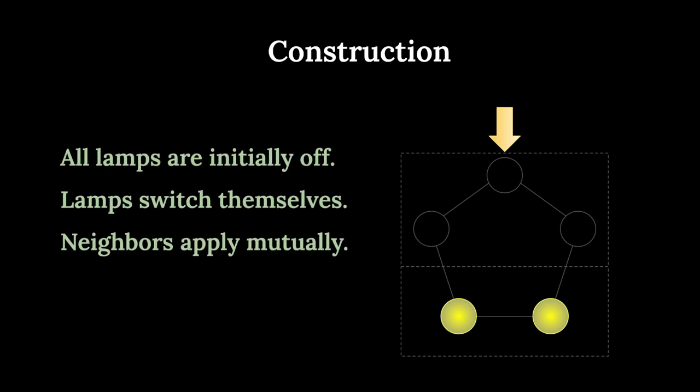Remember those conditions from the beginning? Look at this - let's say not all lamps are initially off, then we do not have a solution. Or let's say that lamps do not switch themselves, no solution. Or let's say that neighbors don't apply mutually, no solution. It's precisely these three conditions that allow this step to be correct. Now we slay the beast and my, is that satisfying.